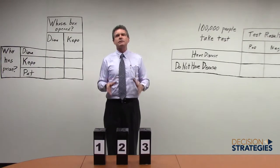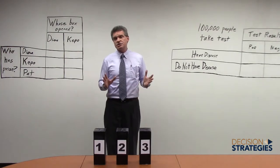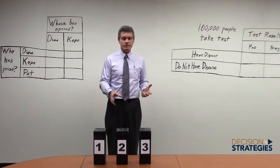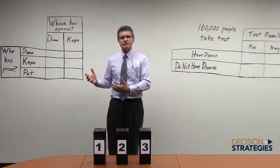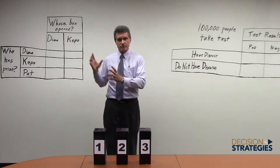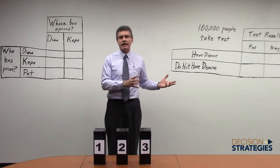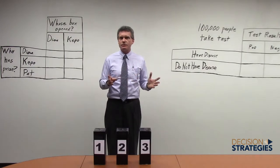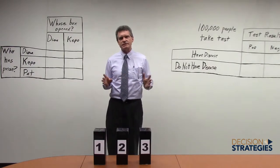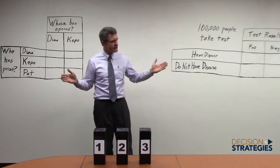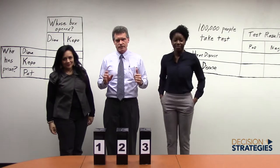The rule is the game show host will never reveal where the prize is. And then the question becomes, after the game show host has opened one of his boxes, the contestant has the choice of either keeping the contestant's box or trading for the remaining box that the game show host has. So we thought we'd do it with a little bit of a different twist by having two contestants. So we've got Diana, we've got Keppo, and they're going to come in and be contestants on the game show here.